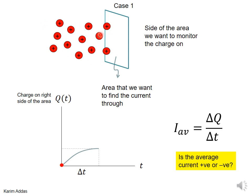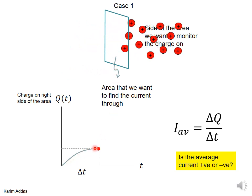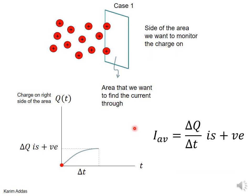Case 1: you have positive charges initially on the left side, so the charge on the right side is zero at time zero. As time progresses, when the charge goes through the surface, the amount of charge on the right side increases. The average current during time delta t is delta q over delta t — the final charge minus the initial charge on the right side divided by the time. In this case, the current is positive because q final minus q initial is a positive value.